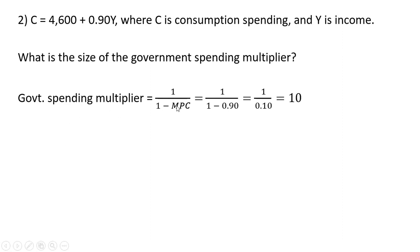Recalling the government spending multiplier is 1 divided by 1 minus the marginal propensity to consume. In this case, MPC is 0.9. So 1 divided by 0.1 is 10.